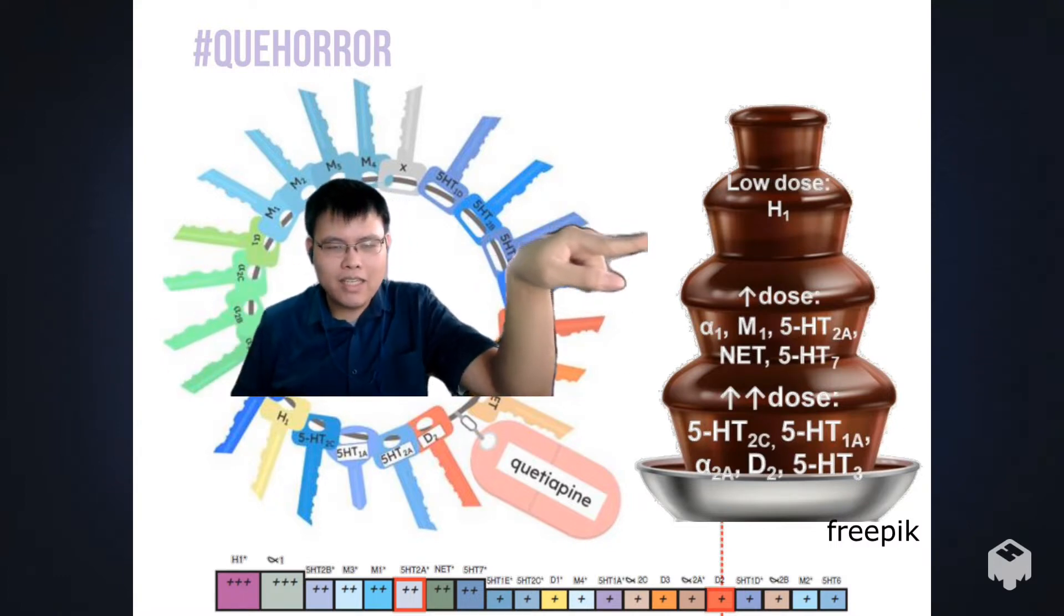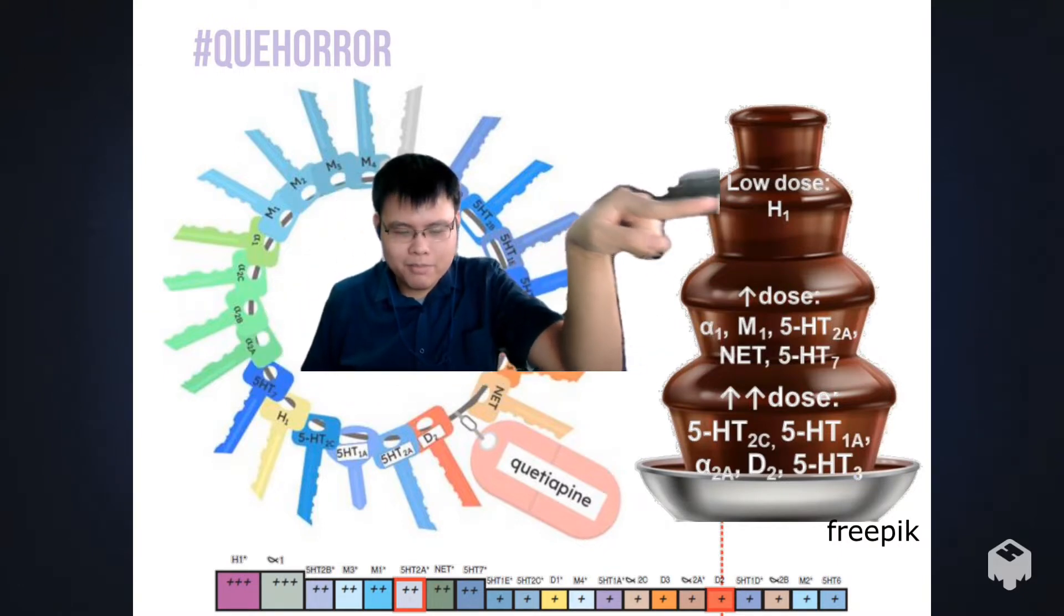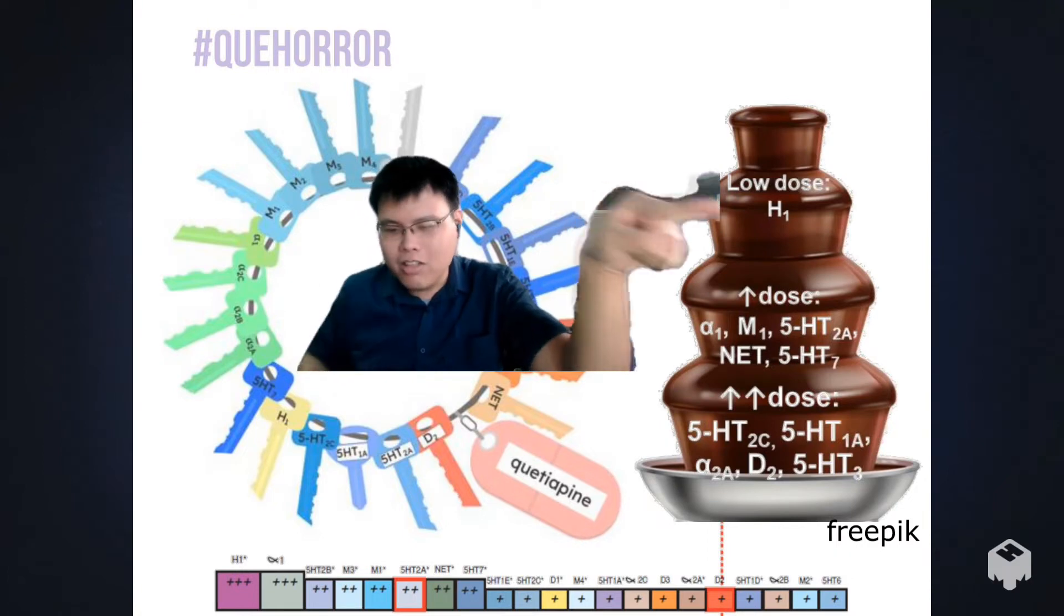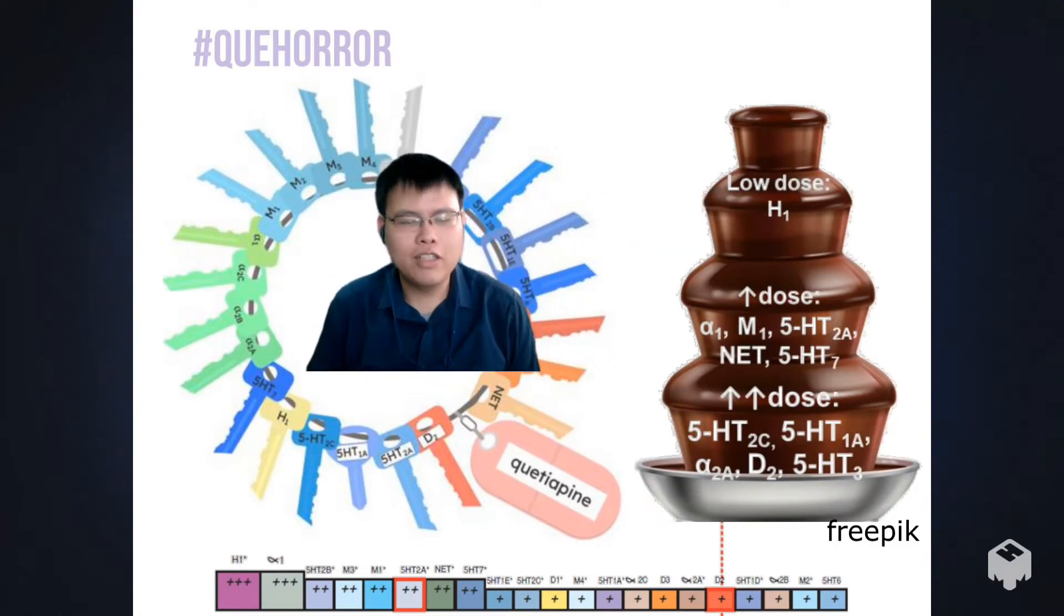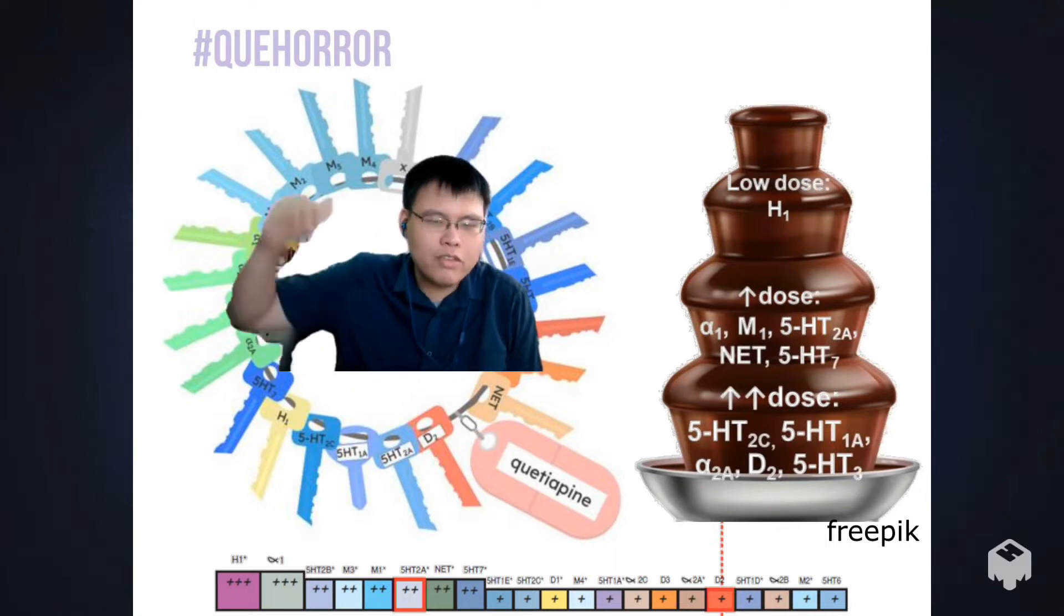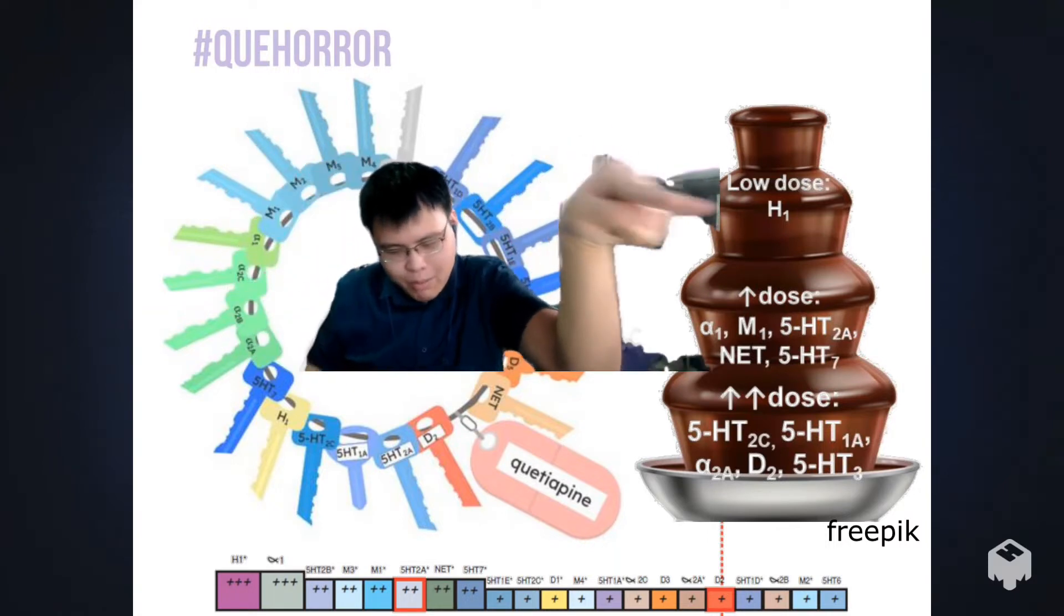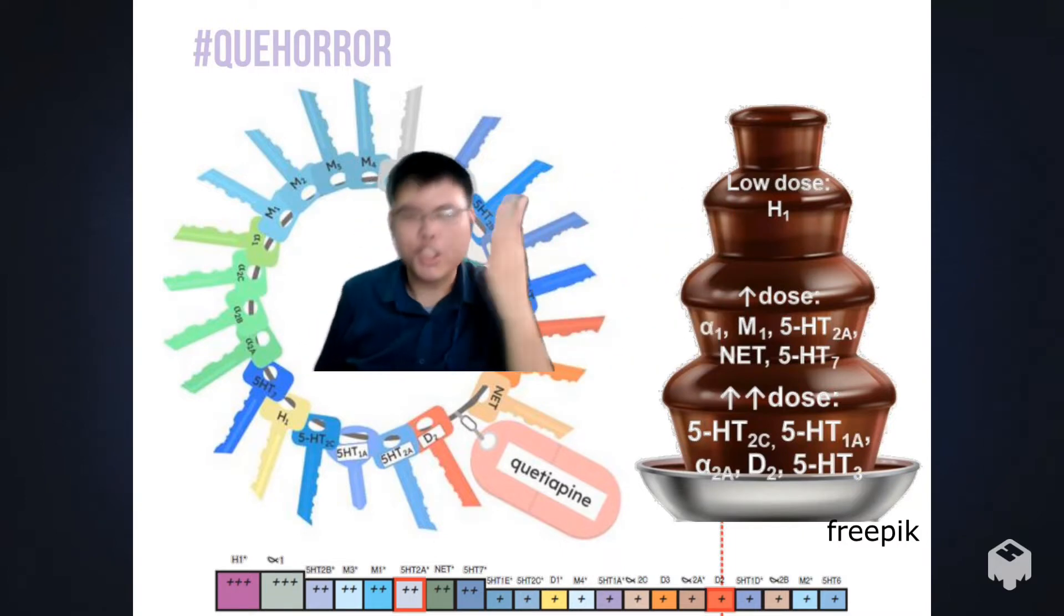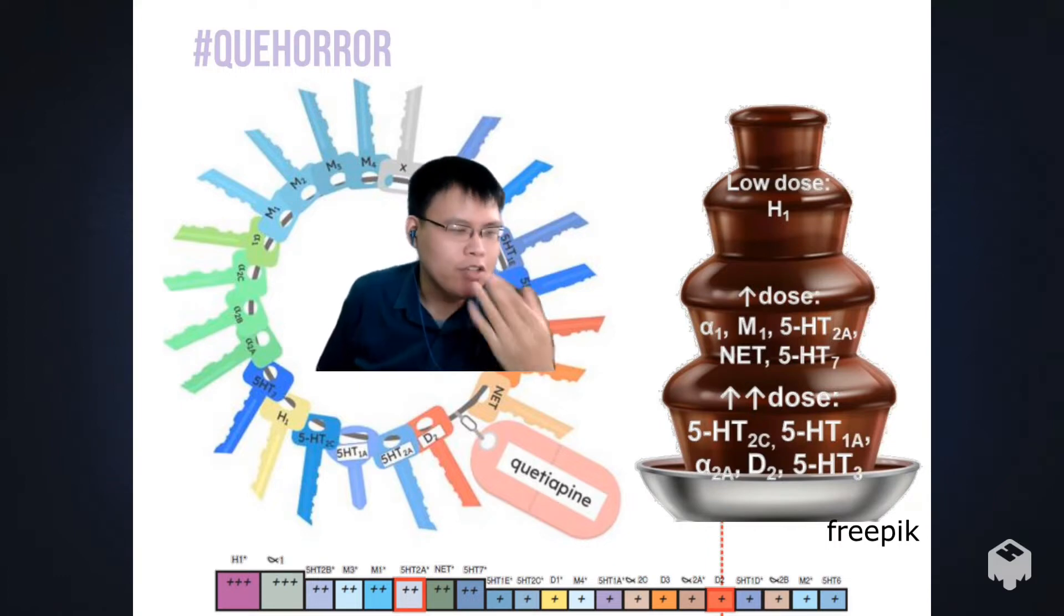One of its really big favorites would be the H1 receptor. It favors it so much so that at low doses, a whole chunk of quetiapine will usually fill it up first. As a fountain, at the very top the chocolate's gonna fill up the H1 receptors first, block those, which is where big pharma first got the idea: hey, we should use this at low doses for insomnia.